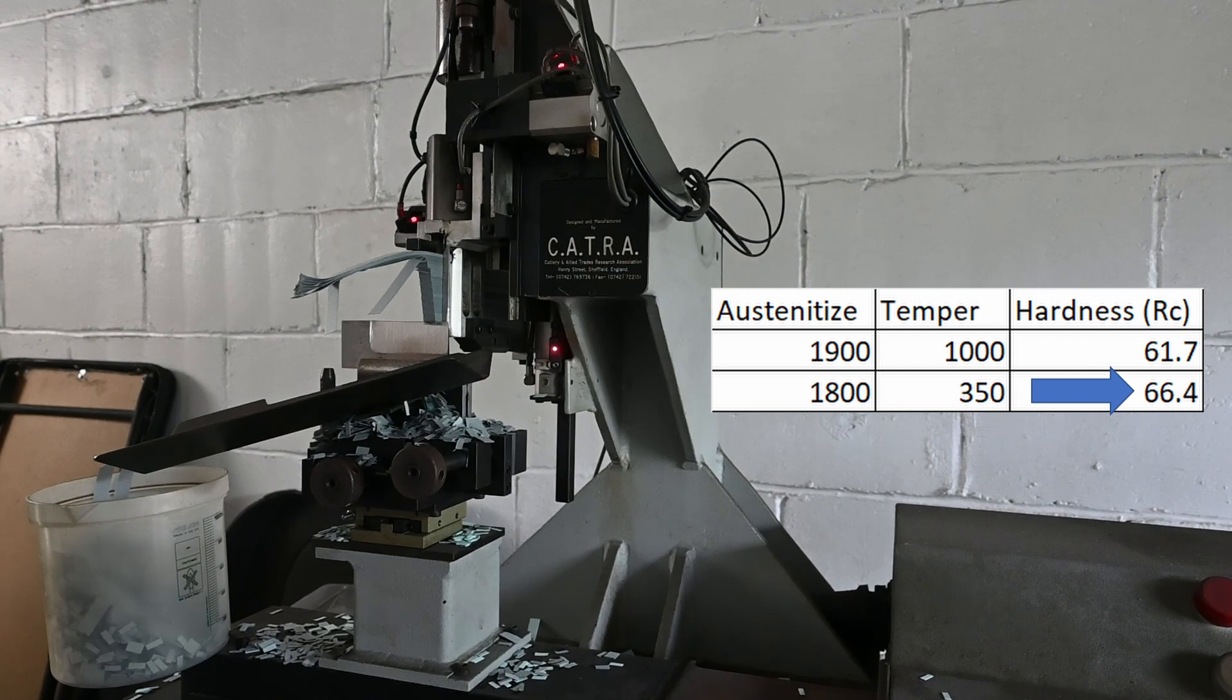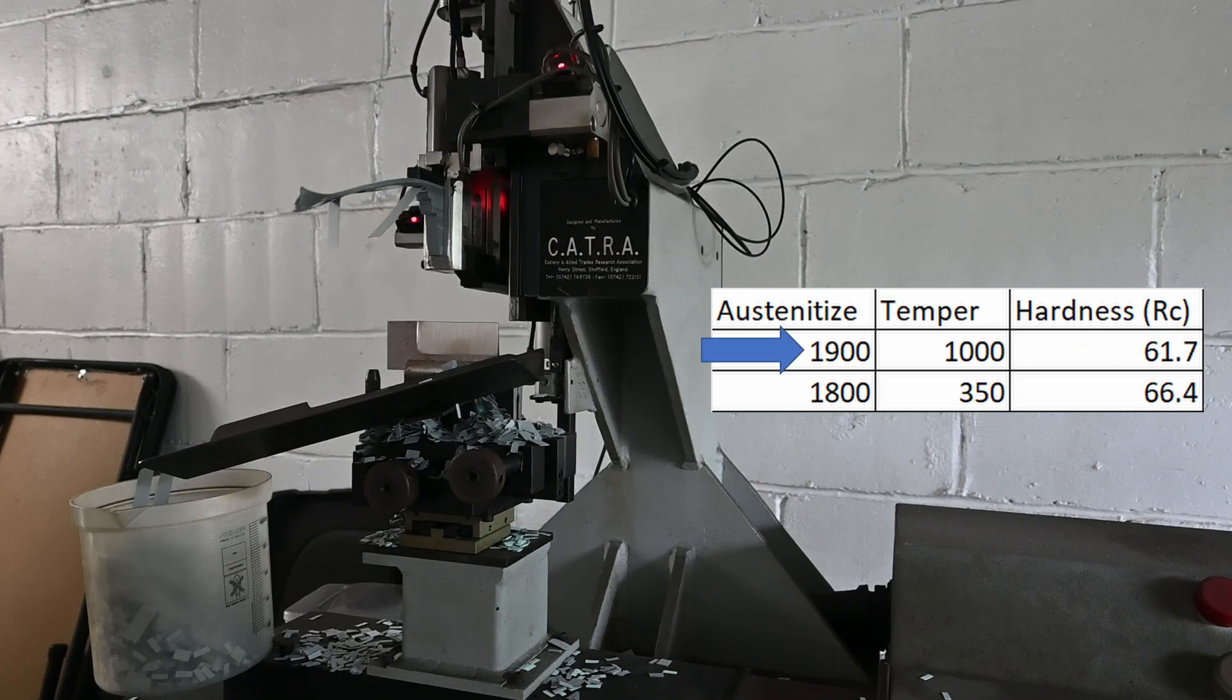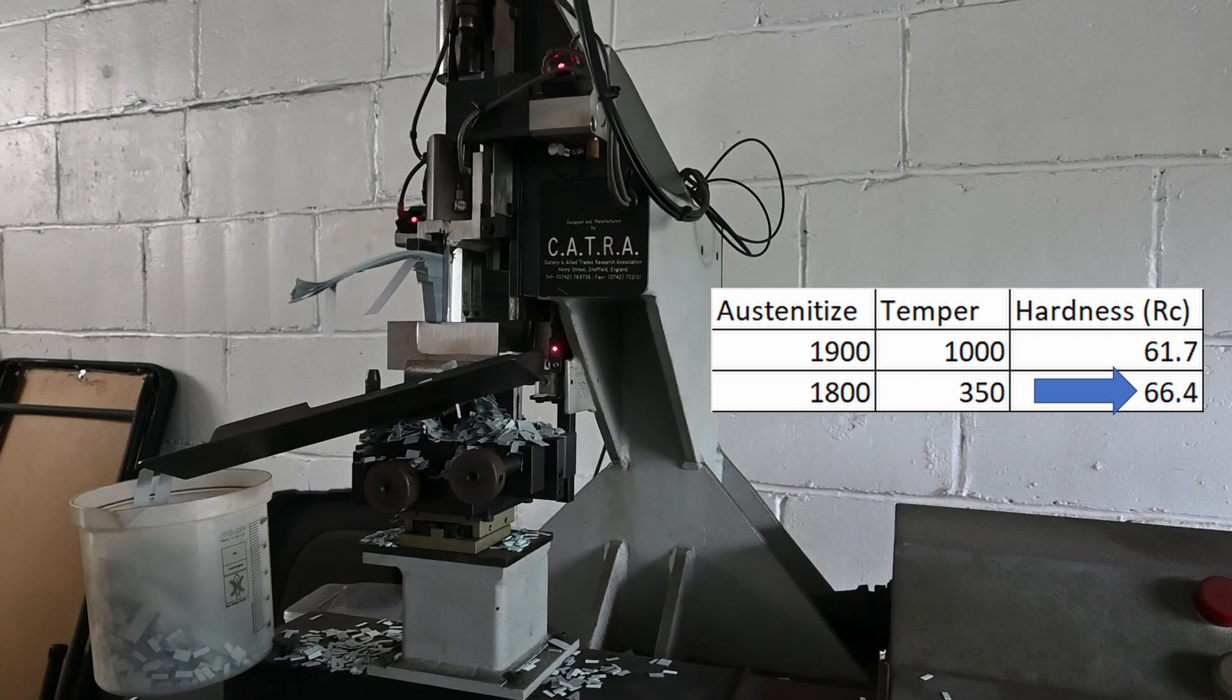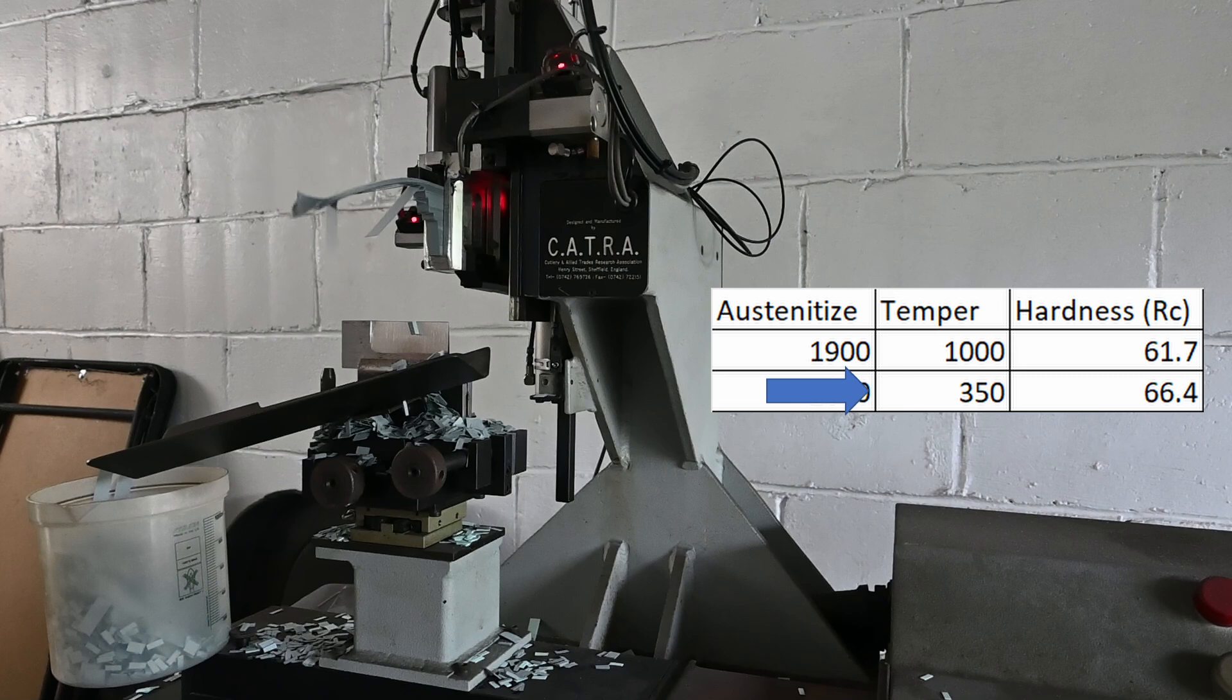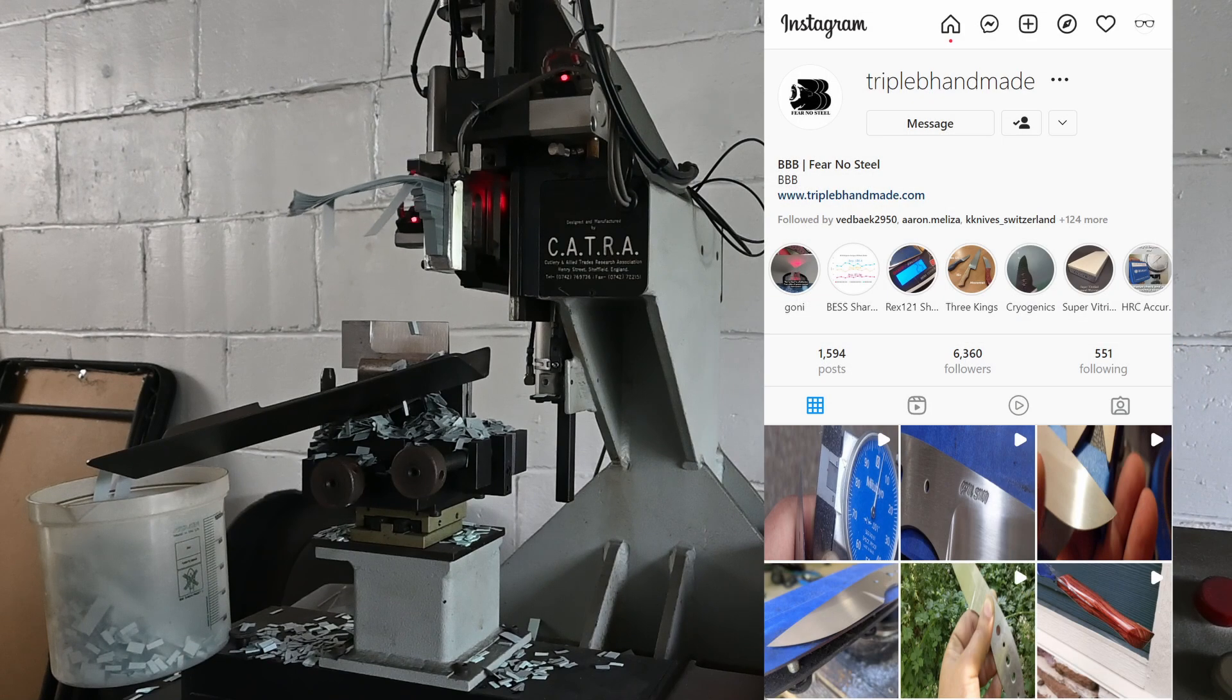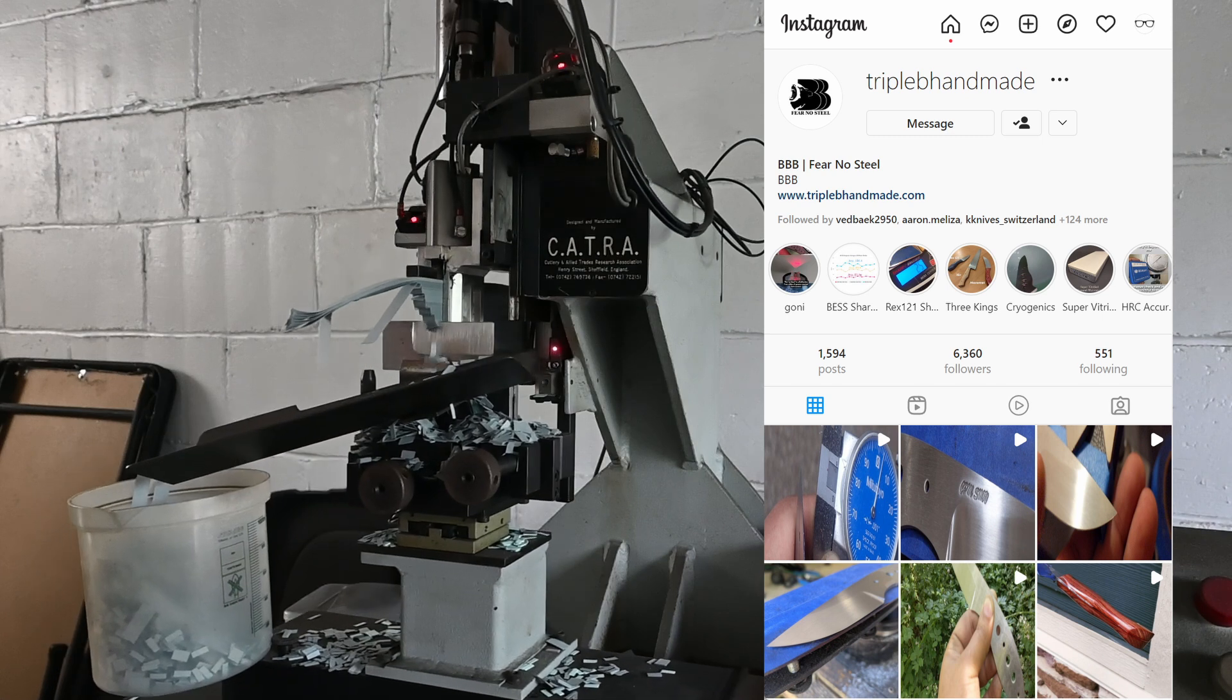The 61.5 RC heat treatment is relatively standard following the data sheet with a 1,900 degree austenitize and a 1,000 degree temper. The high hardness used a lower austenitize of 1,800 degrees in combination with a low temper of 350. Knife maker Sean Houston of Triple B Handmade ground the bevels on the CATRA knives after I heat treated them.